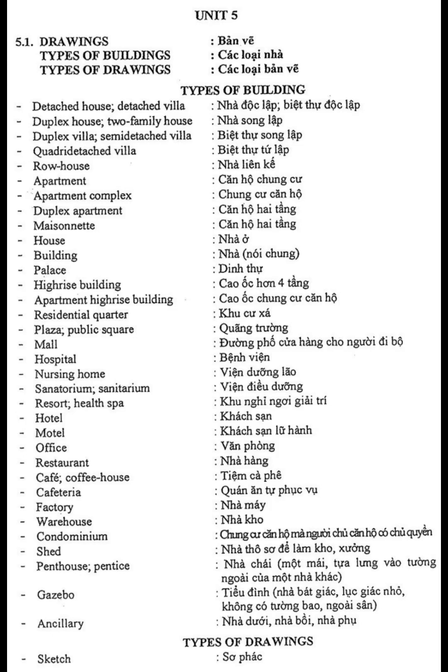Drawings. Types of buildings. Types of buildings: Detached house, Detached villa, Duplex house, Two-family house, Duplex villa, Semi-detached villa, Quadra-detached villa, Row house, Apartment, Apartment complex, Duplex apartment, Maisonette, House, Building, Palace, High-rise building, Apartment high-rise building.